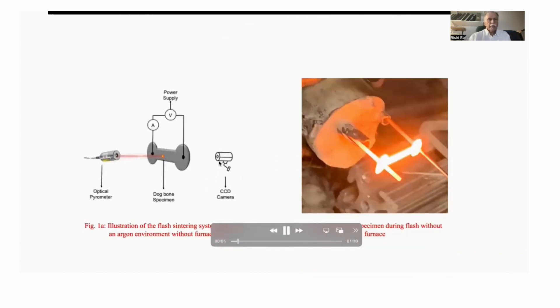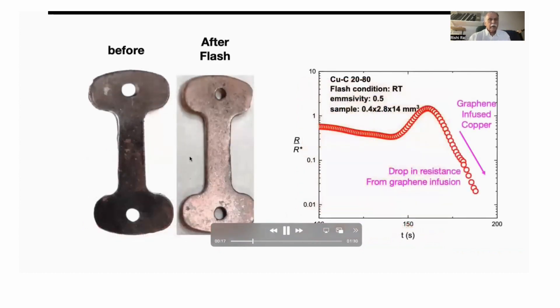So the FLASH method is shown over here. We have the sample, which is a powder mixture of carbon black and copper. And we apply a current directly to the sample to make it FLASH. And you can see it over here after FLASH.